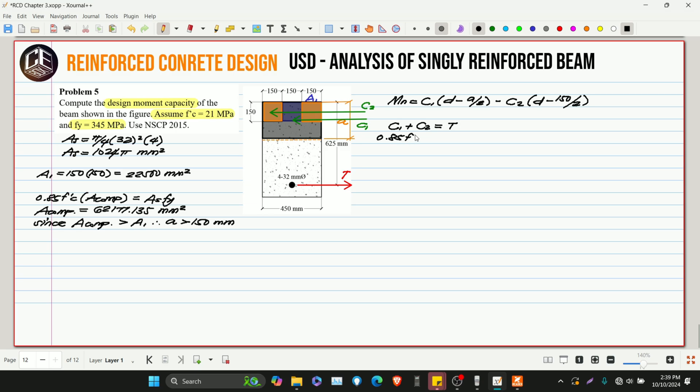C1 plus C2 is equivalent to tension force T. So, C1 is 0.85 F'C multiplied by the whole area which is equivalent to 450 multiplied by height A. Then we subtract these two areas which is equivalent to 150 times 150 squared, multiplied by 2. So, we factored out 0.85 F'C. Then equivalent to AS FY. So, our assumption again is the steel yielded. So, we have two assumptions here: the A and the steel. The A we get should be greater than 150 but less than 625.